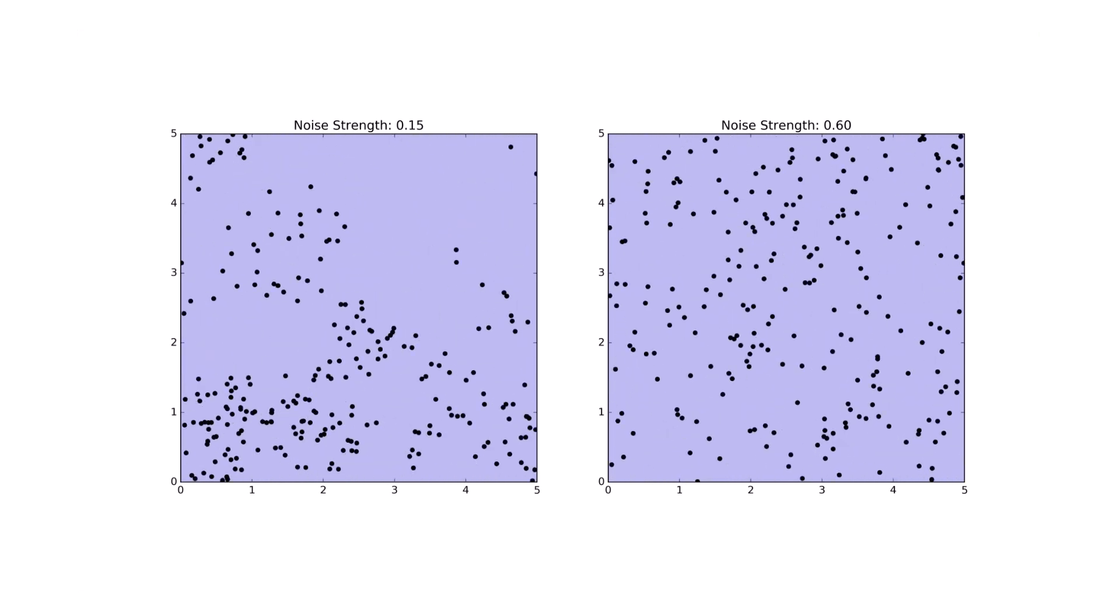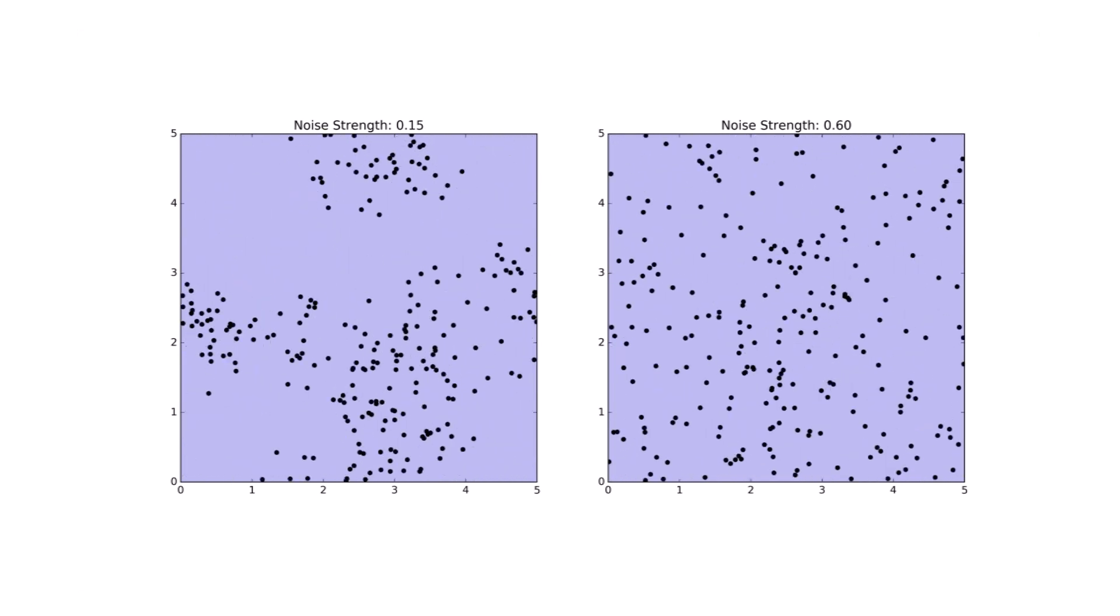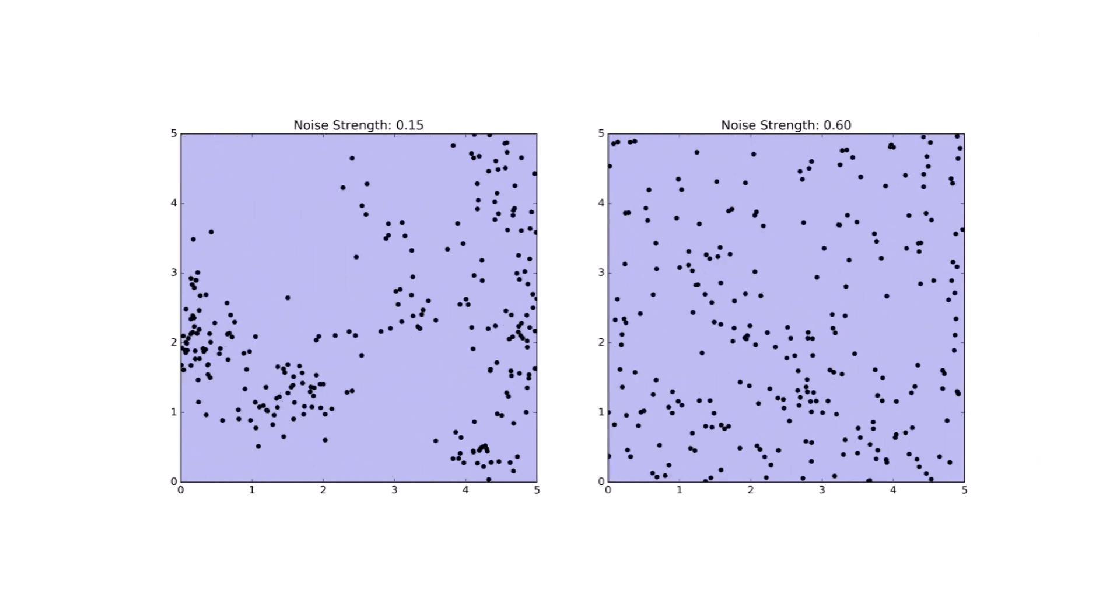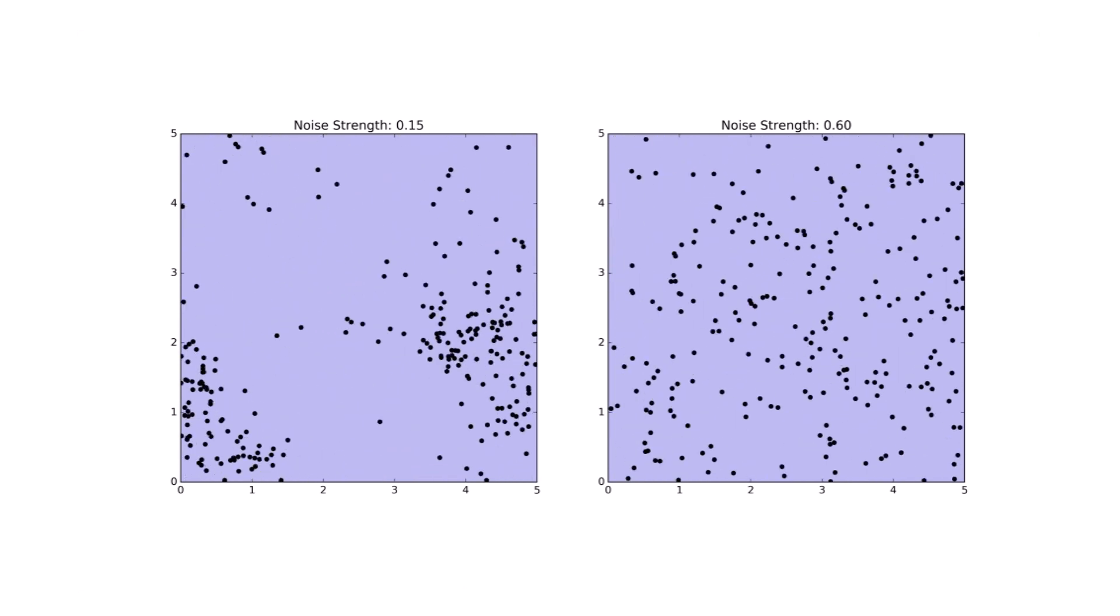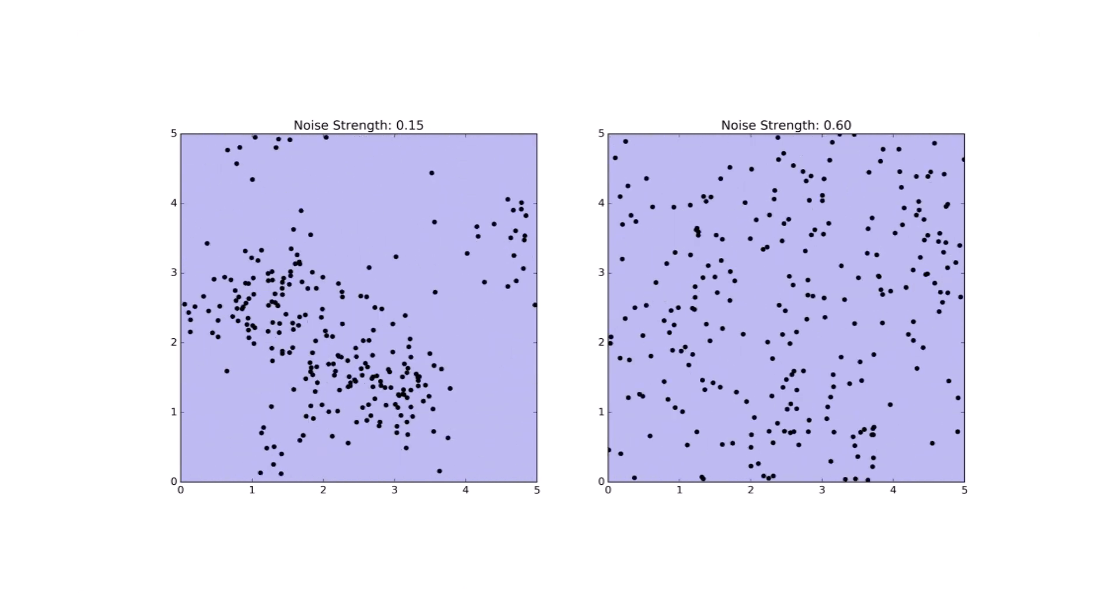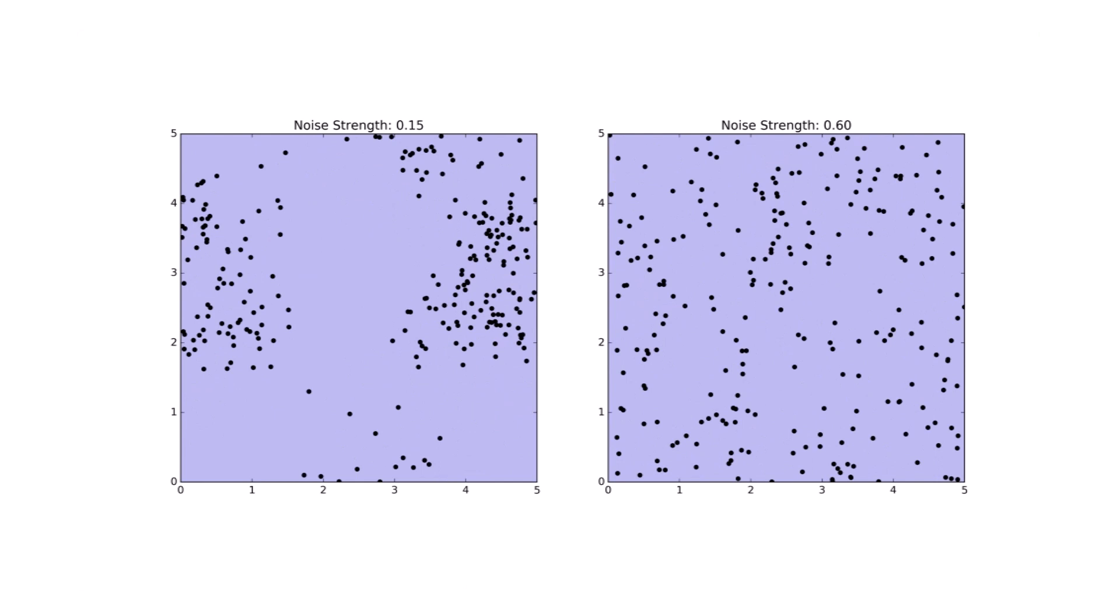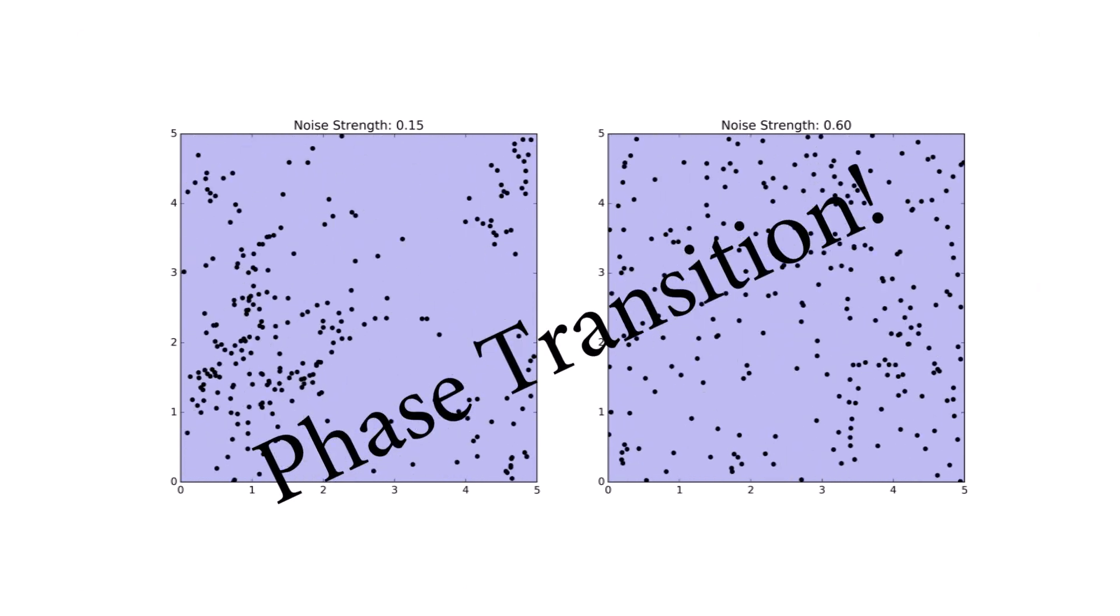At this value, the model clearly shows swarming behavior. On the right, we have increased the noise strength to 0.6. And the swarming behavior has disappeared and the motion is now random. This shows that a phase transition occurs in the system.